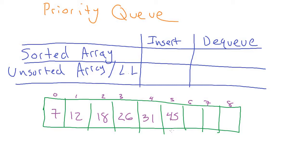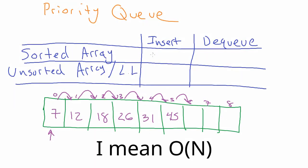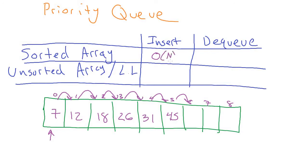However, if we want to insert something like a value 3 into the array, to maintain the sort we have to put it in the correct slot, which means everything has to shift over one. On average we're going to have to shift down half the array, and because there are n items that's O(n) for inserting into the sorted array. Doing the dequeue, however, is quite easy — we just go to the furthest right filled slot and take that value out, which is O(1). So with a sorted array, dequeuing is very fast, but inserting is O(n).